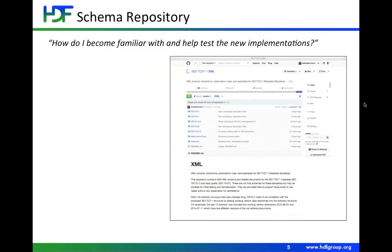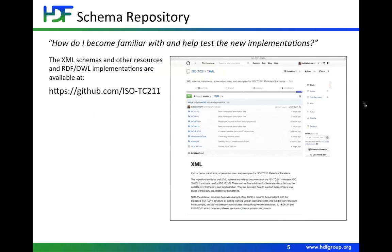If you want to become familiar with and test the new implementation, there is a publicly available GitHub repository. The schemas are updated as often as I update them on my computer. We've already got some changes and possible bugs in the schema being recognized — mostly in the transform from the old to new models. Steve Richard in the United States, Peter Parslow in the UK, and Francois Pounier, who some of you probably know from GeoNetwork, are all helping to work on these.